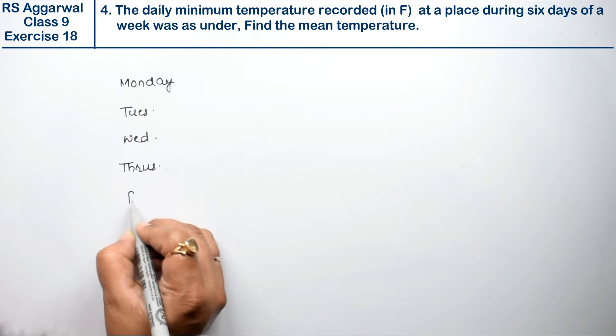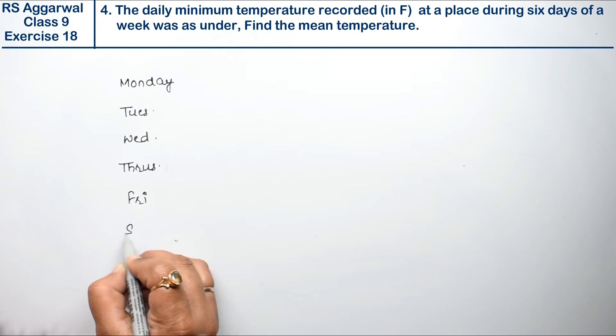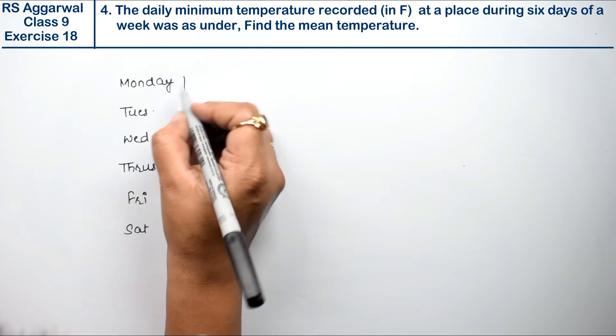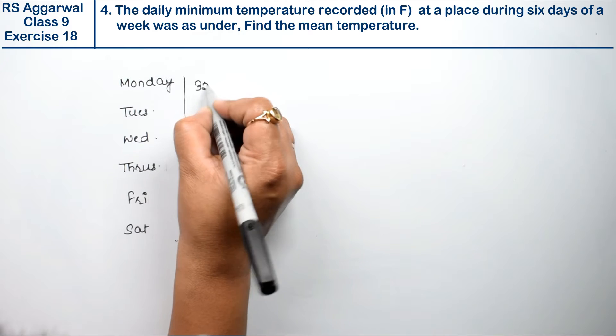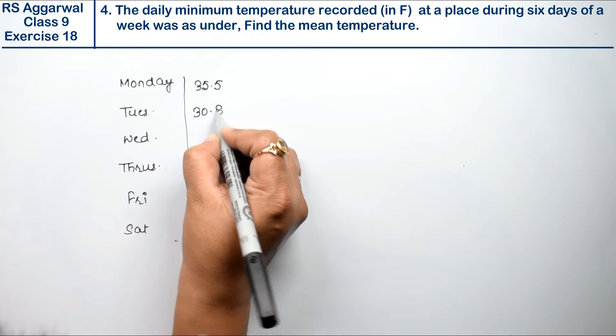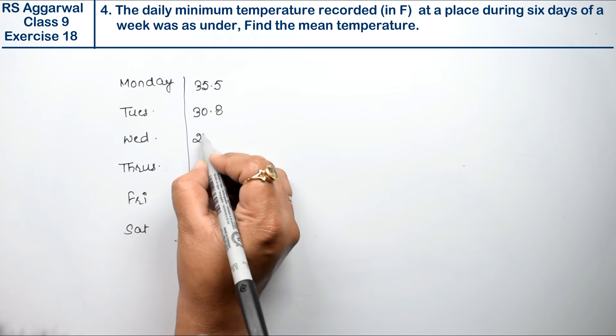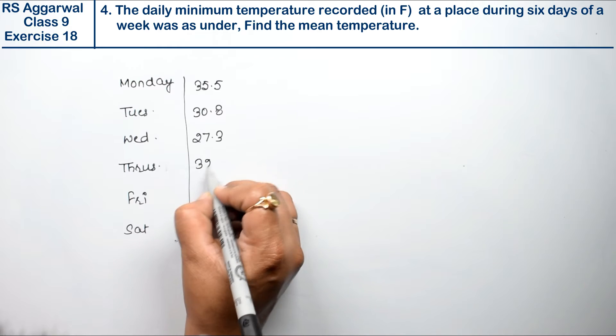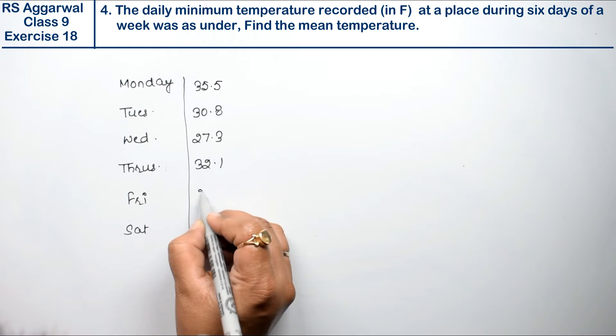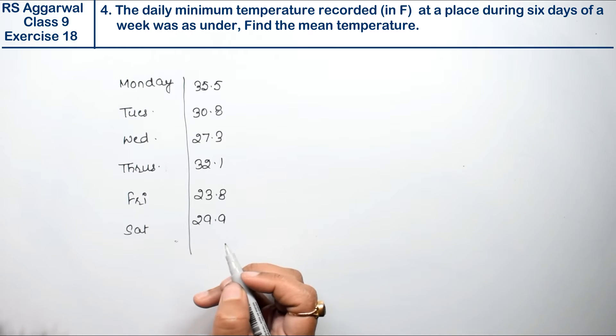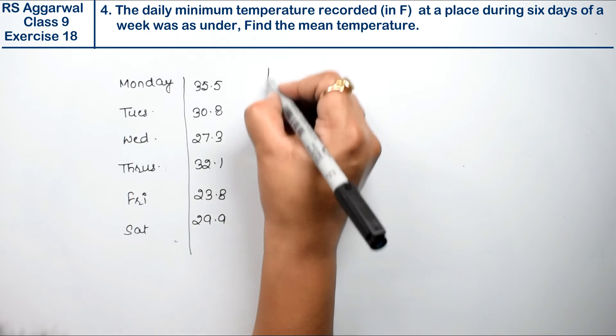Friday and Saturday ka temperature kya de rakha hai? Iska de rakha hai 35.5, 30.8, next is 27.3, next is 32.1, next 23.8 and last one is 29.9. Yeh de rakha hai. Aab hame mean temperature nikala hai.